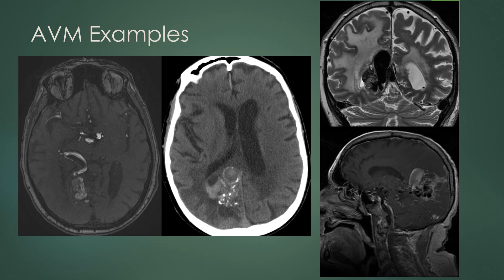More examples of AVMs. Here on another MRA you see the vessel from the PCA supplying the nidus in the right occipital region. On CT, here are those coarse or popcorn calcifications within the nidus, and you can see some aneurysmal dilatation, usually of the venous outflow. On a T2-weighted image, you can see the flow voids of the nidus as well as the aneurysmal dilatation of the venous drainage, with more gliosis and edema within the surrounding brain parenchyma. Here it is on a post-contrast sagittal T1 showing the nidus as well as aneurysmal dilation of that venous drainage.